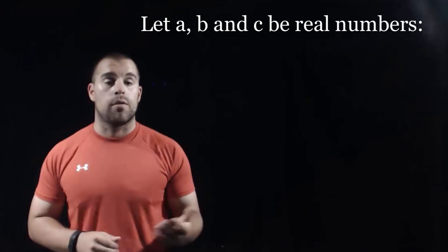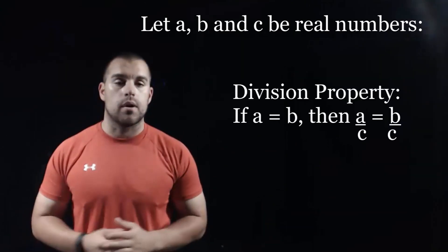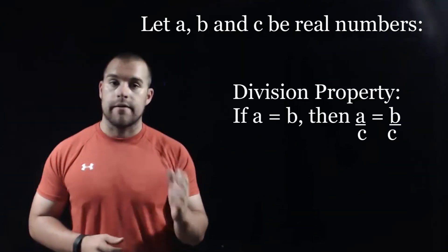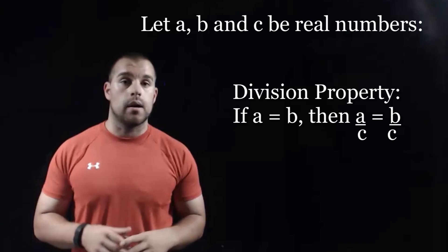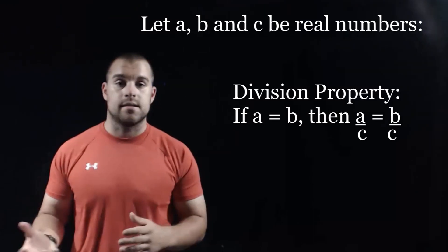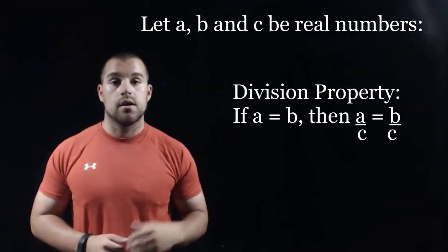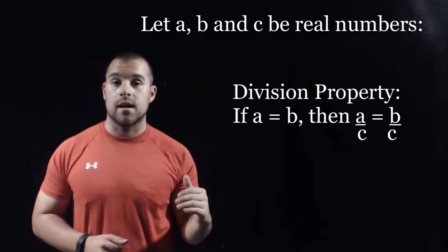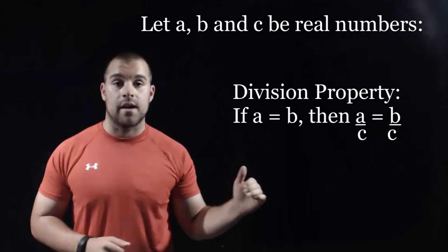Our fourth property is the division property. So if A equals B, then what we can do is divide by C on both sides of the equation. So A divided by C equals B divided by C.